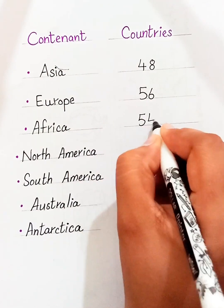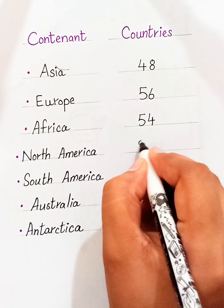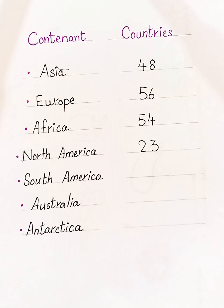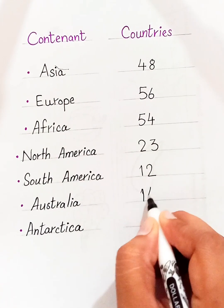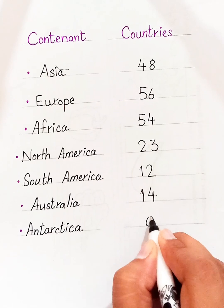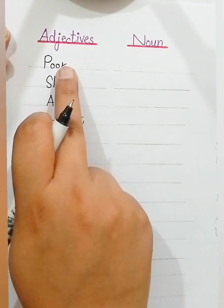North America has 23 countries. South America has 12 countries. Australia has 14, and Antarctica has 0 countries. Adjectives to noun.